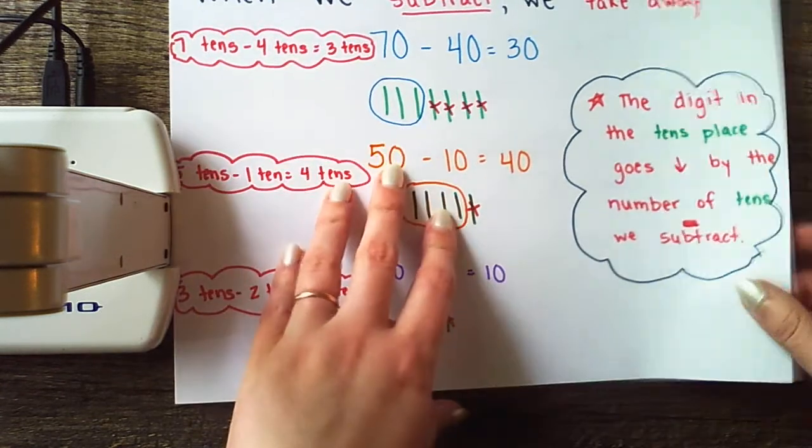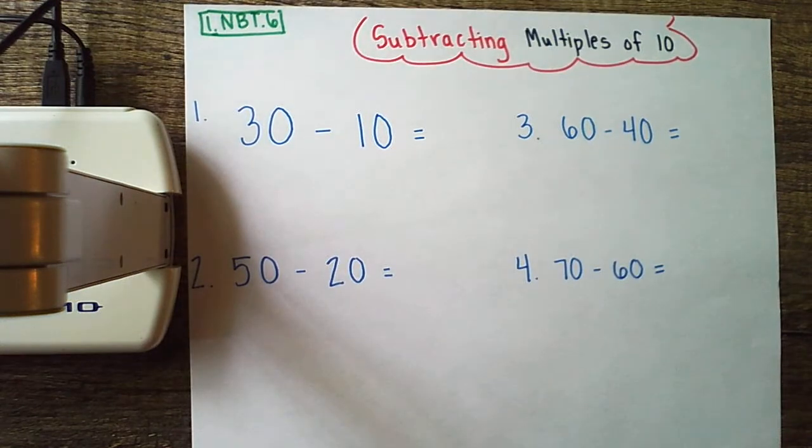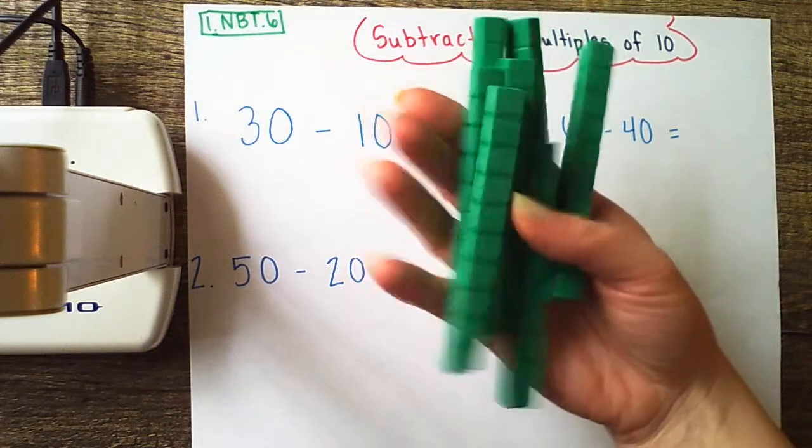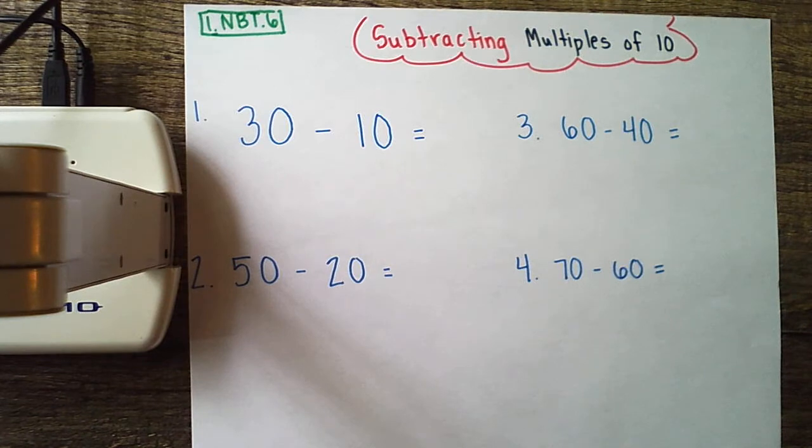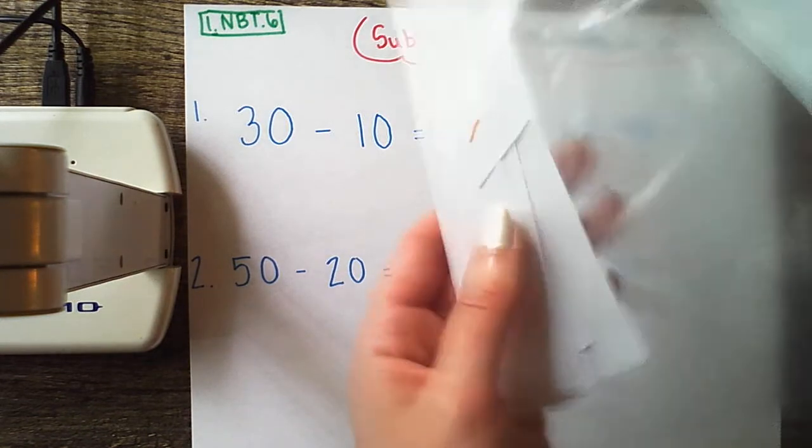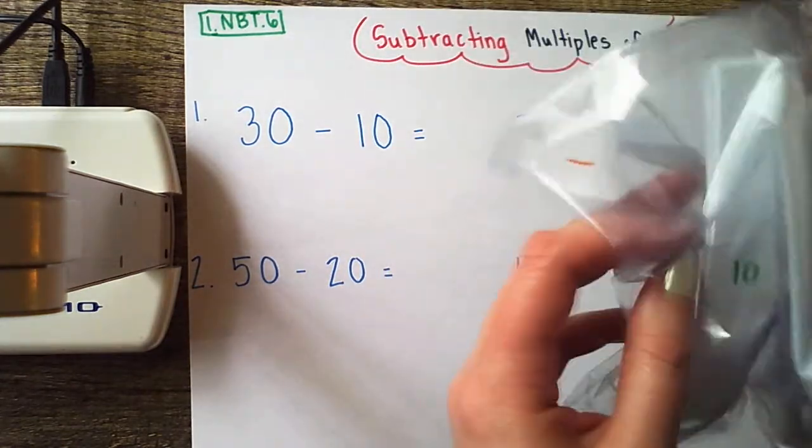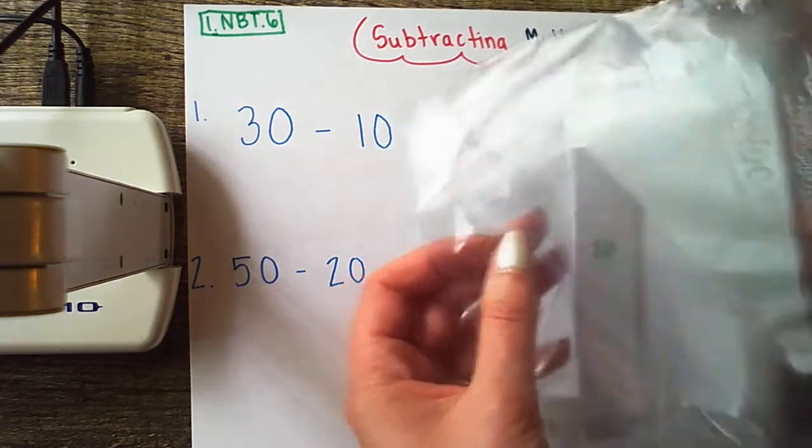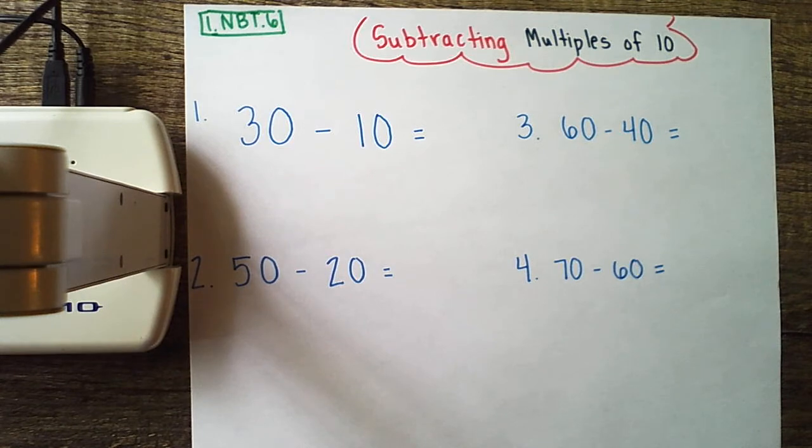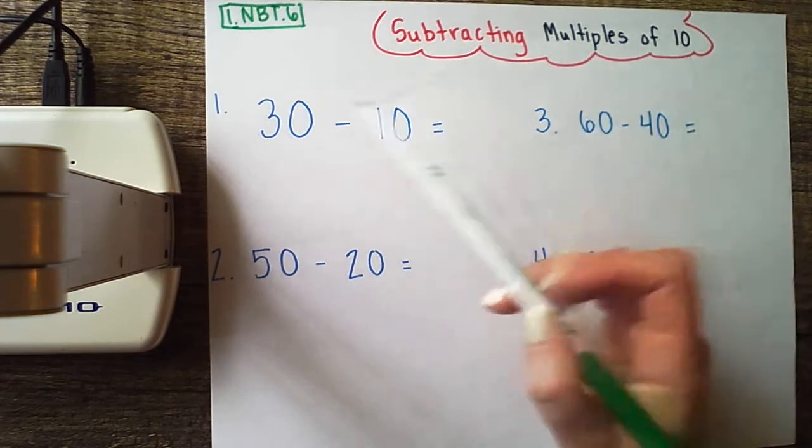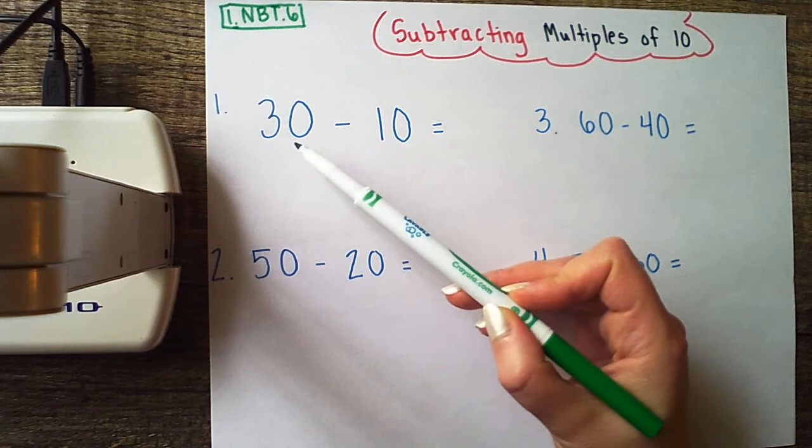Let's do some more practice. We are subtracting multiples of 10 and I'm going to be doing this by drawing a picture. You know that objects or your base 10 blocks can be very useful in these situations. If you prefer to use them or your homemade set that you made a couple weeks ago, that's perfectly fine - remember that the longer strips are your tens. But I find that drawing a picture is super helpful because I'm always going to have something to write with and something to write on. Drawing a picture is a great strategy no matter what type of math you're working on.